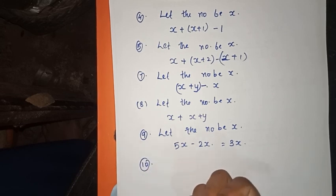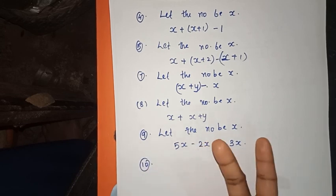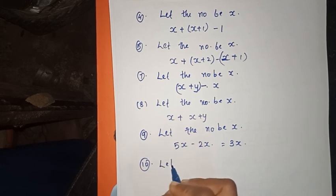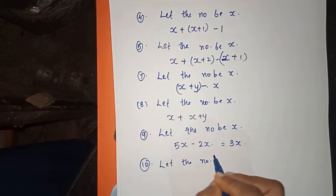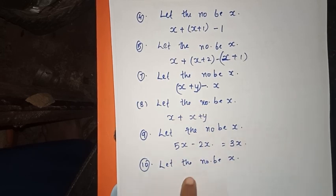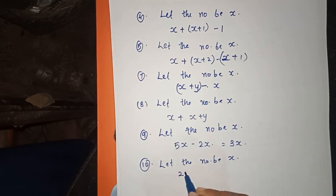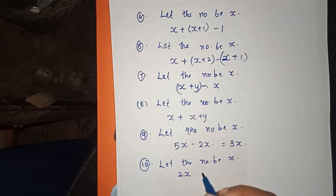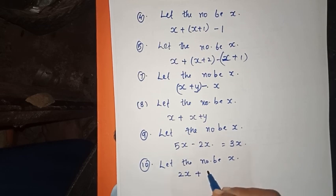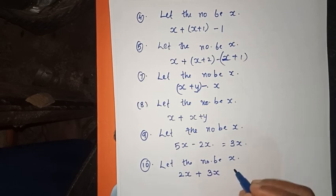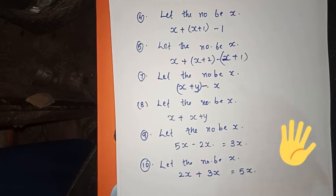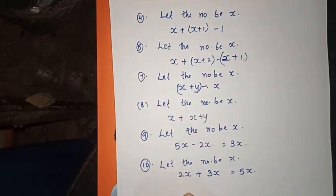The next question: add two times the number with three times the same number. Two times the number is 2x, and three times the number is 3x. So 2x plus 3x equals 5x. Now we will solve the question.